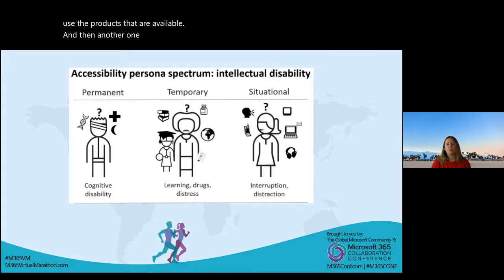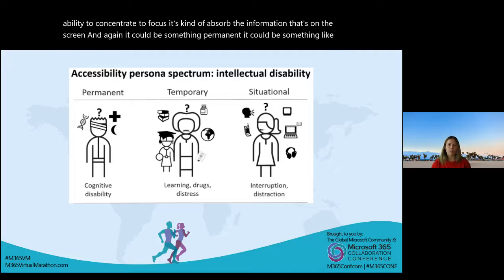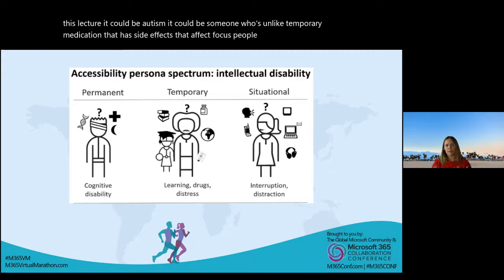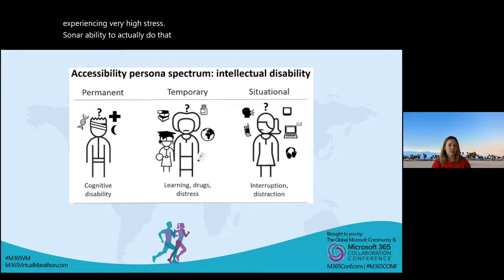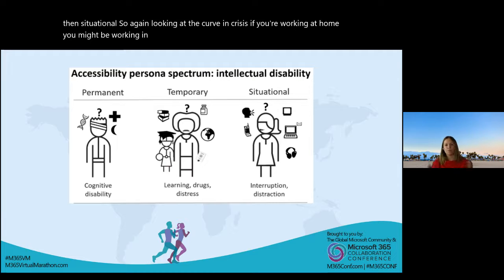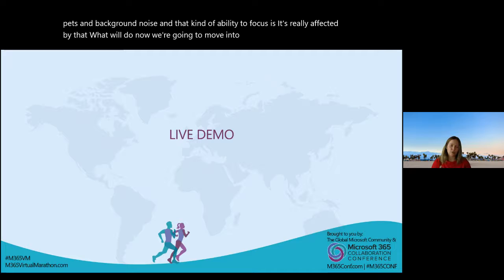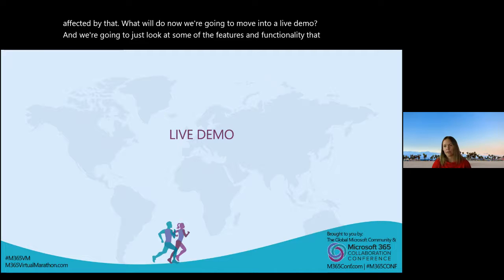Another area I wanted to dive into is neurodiversity — things that affect people's ability to concentrate, focus, and absorb information on screen. It could be something permanent like dyslexia or autism, or it could be temporary medication with side effects that affect focus, or people experiencing high stress or tiredness. And situationally, if you're working at home in a small environment with lots of people and background noise, that ability to focus is really affected. We'll now move into a live demo and look at features and functionality that Microsoft provide out of the box to help in these scenarios.